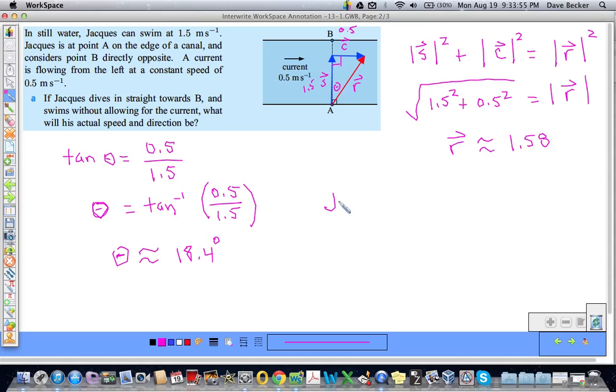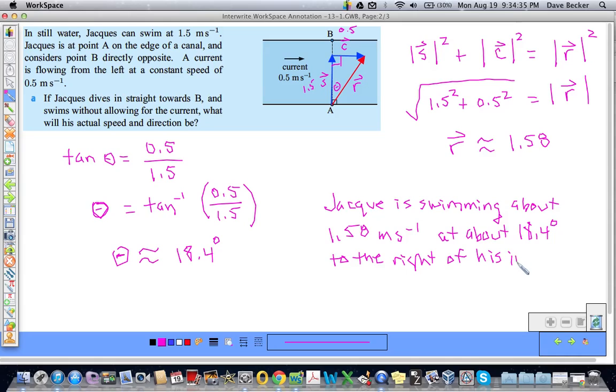So we can say that Jacques is swimming about 1.58 meters per second at about 18.4 degrees to the right of his intended path. That would be good, of his intended path. All right, cool.